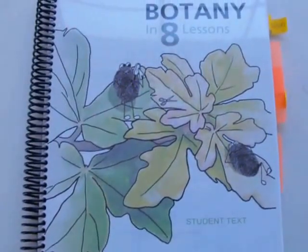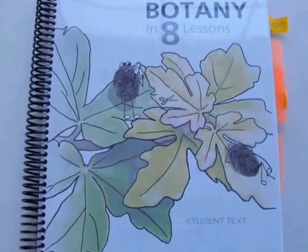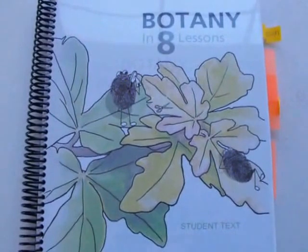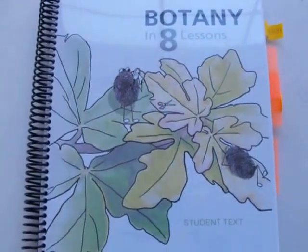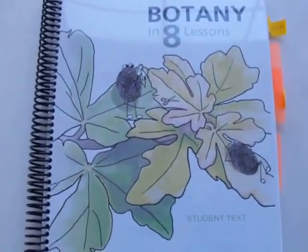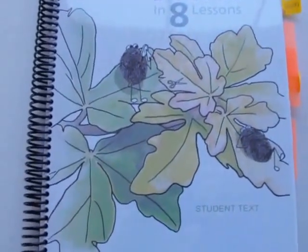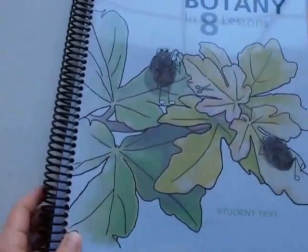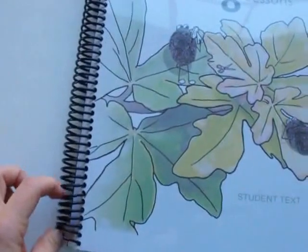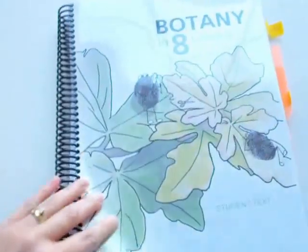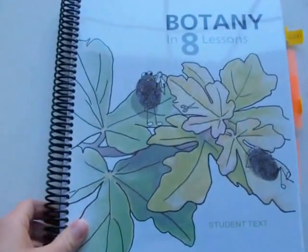Today I wanted to give a curriculum walkthrough of a science program we are using this year. It is called Botany in 8 Lessons. I purchased this at EllenJMcHenry.com as a PDF digital download for $14.95. I printed it out at home and took it to my local office depot and had it coil bound with a plastic cover on the front and a black cover on the back for about $4.